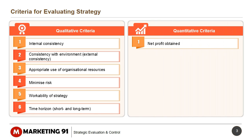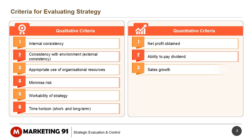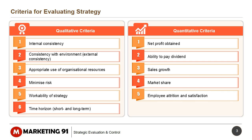Quantitative criteria include: net profit obtained, ability to pay dividend, sales growth, market share, employee attrition and satisfaction, and cost efficiency.